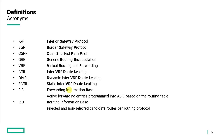Before we get started in the overview section, we have a definitions page to illustrate the key acronyms for the feature. BGP stands for Border Gateway Protocol. VRF is Virtual Routing and Forwarding. IVRL stands for Inter-VRF Route Leaking, and there are two different ways to configure it — dynamically and statically. In this presentation, we'll be covering how to do it dynamically using Border Gateway Protocol.